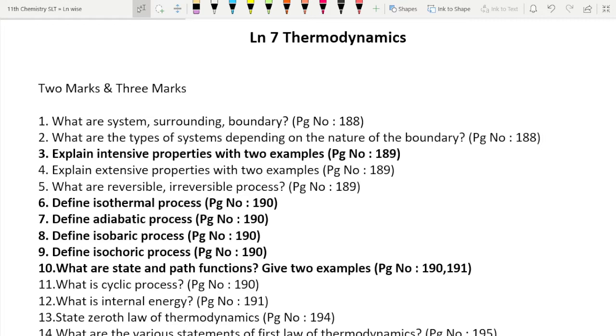So first, two marks and three marks. First question: what are system, surrounding, boundary? Page number 188. Second question: what are the types of systems depending on nature of boundary? Page number 188.